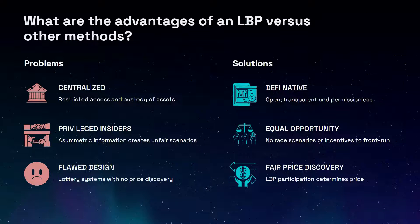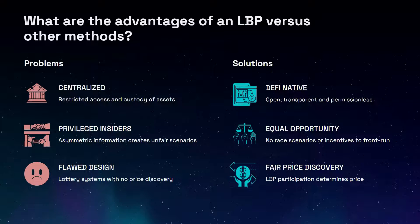Traditional token distribution models often have issues like centralisation, front running, races to buy, and asymmetric information, which gives certain users an advantage over others. Liquidity bootstrapping pools solve these problems by artificially increasing the token price at the start, discouraging early buying and ensuring all participants join under the same terms, reducing the impact of asymmetric information while also allowing for self-custody of tokens. This creates a more fair and even playing field for all participants.